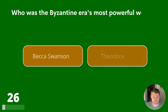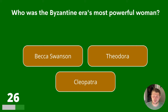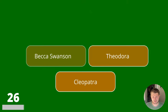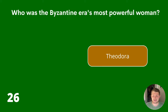Halfway through — Question 26. Who was the Byzantine era's most powerful woman? Becca Swanson, Theodora or Cleopatra? The answer is Theodora.